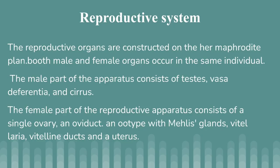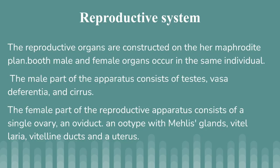The reproductive organs are constructed on a hermaphrodite plan. Both male and female organs occur in the same individual. The male part of the apparatus consists of testes, vas deferens, and cirrus. The female part consists of a single ovary, an oviduct, a uterus with Mehlis gland, vitellaria, vitelline duct, and a uterus.